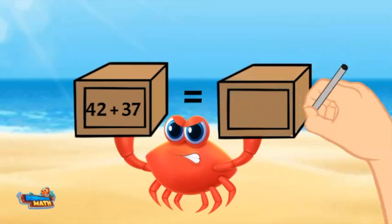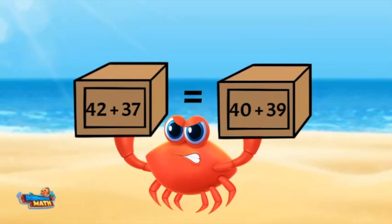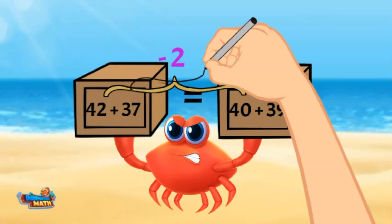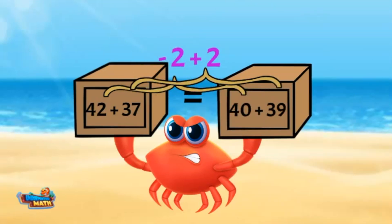Is 42 plus 37 equal to 40 plus 39? In addition, we change numbers around to make them easier to work with. I want to take 2 from 42 to make it 40. I took away the 2, so I need to add it back on to 37 to make 39. The equation to the left should read 40 plus 39. If you are not feeling confident with moving the numbers around, you can find the value of each expression.